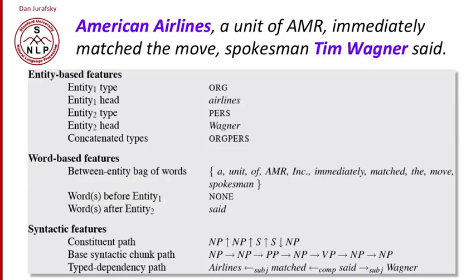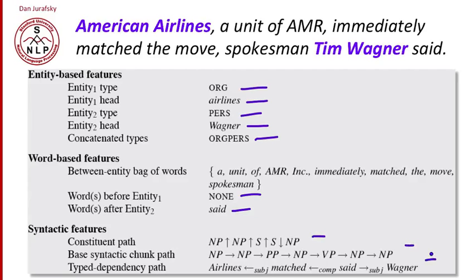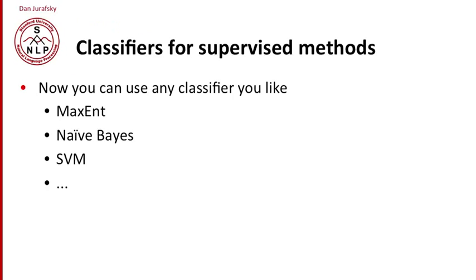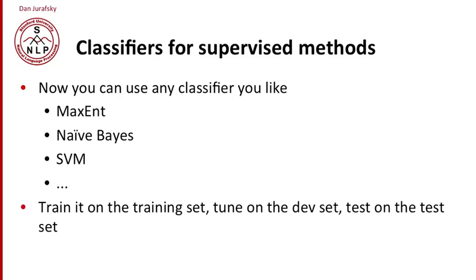In summary, for our sentence "American Airlines, a unit of AMR, immediately matched the move, spokesman Tim Wagner said," we might have a whole series of features: the entity type of the first mention being org, the second being person, the head of the first being "airlines," the head of the second being "Wagner," the concatenated type feature "org person," the bag of words between the two entities, the word before entity one (nil), the word after entity two ("said"), and all the various parse features. We extract all these features from our training set and test set and do standard classification. You can use any classifier — MaxEnt, Naive Bayes, SVMs, or others. You train on the training set, tune hyperparameters on the dev set, and test on the unseen test set.